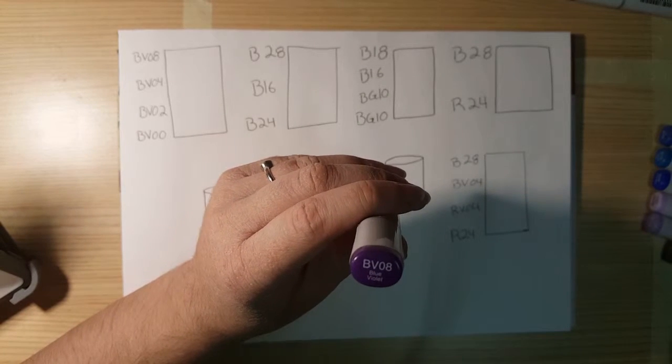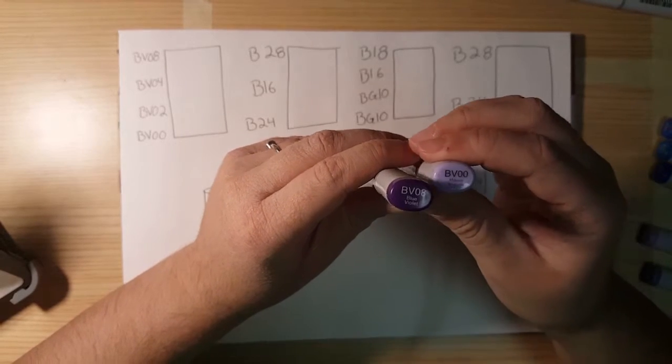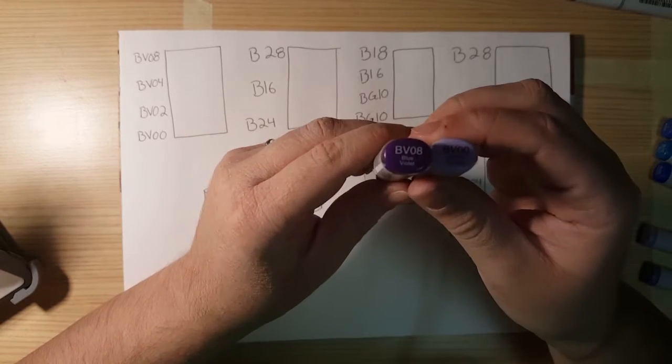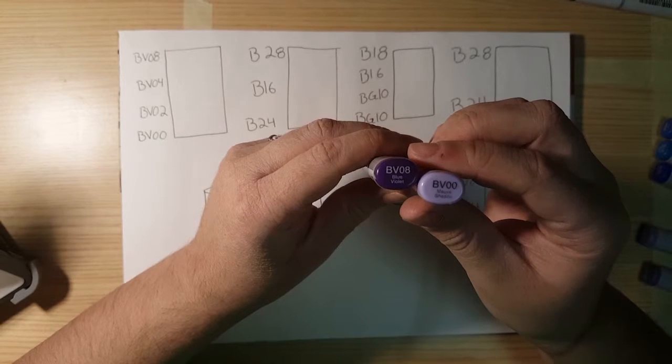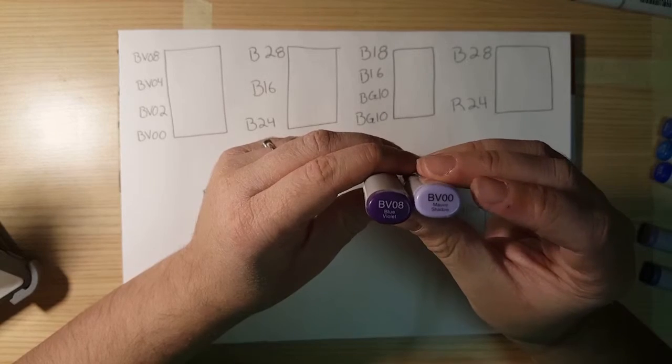So for an example, I have here my BV00, and you can see the difference. They're both highly saturated, but this one is going to be a lot brighter, or in this case, I guess I would say lighter.